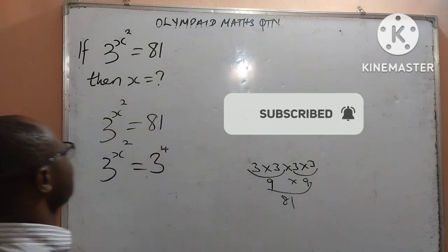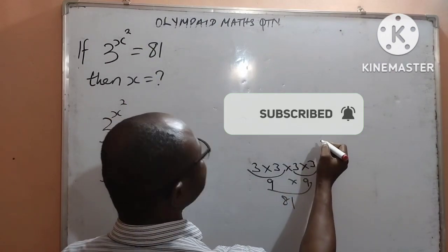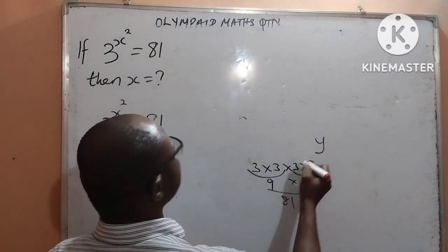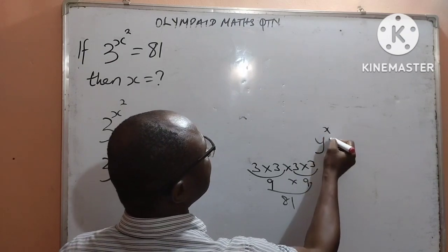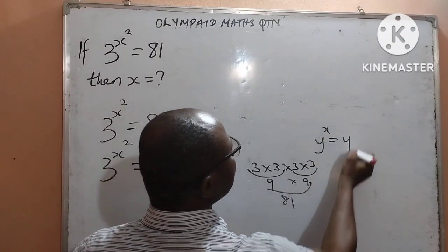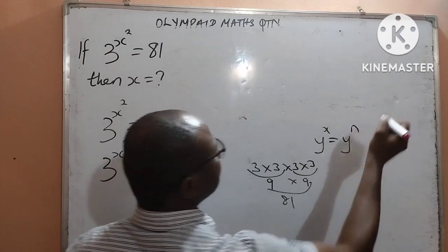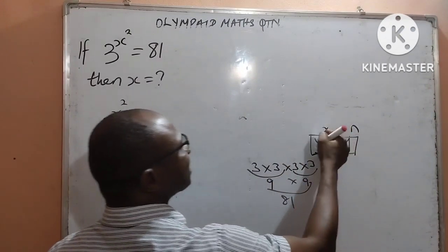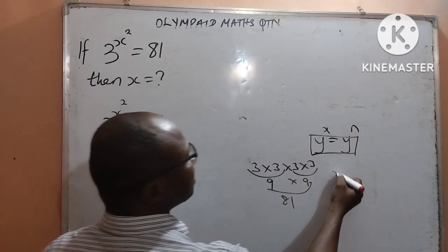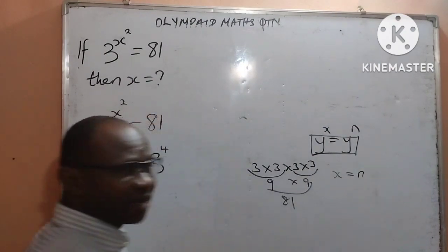Now, by the law of indices that says that if I have y to the power of x equal to y to the power of n, once the bases are equal, automatically the powers become equal. It means that x is equal to n.